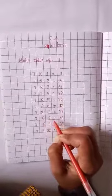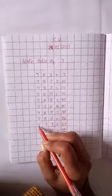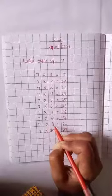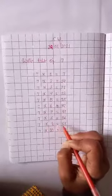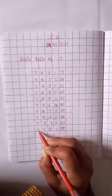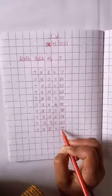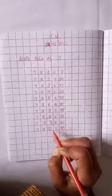Seven multiplication, seven times is equal to fifty-six. Seven, eight times, fifty-six. Seven multiplication, nine times is equal to sixty-three. Seven, nine times, sixty-three. Seven multiplication, ten times is equal to seventy. Seven, ten times, seventy.